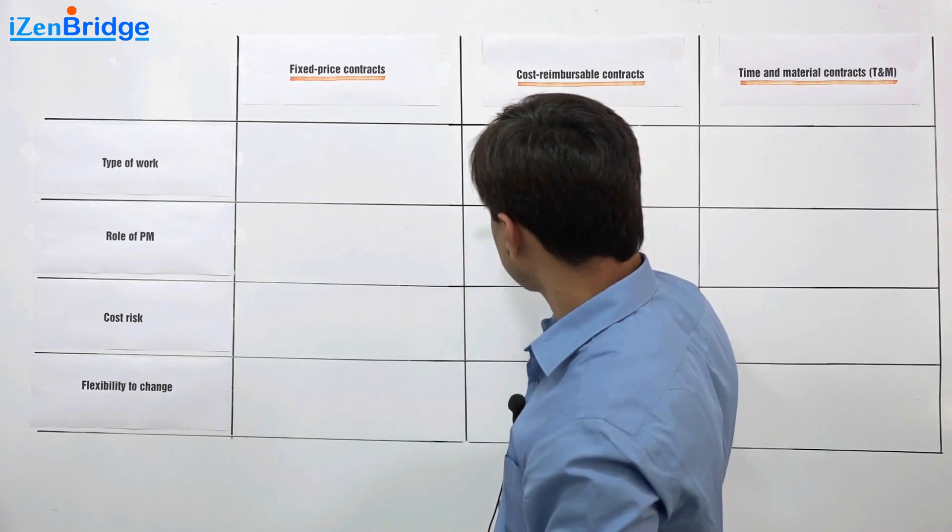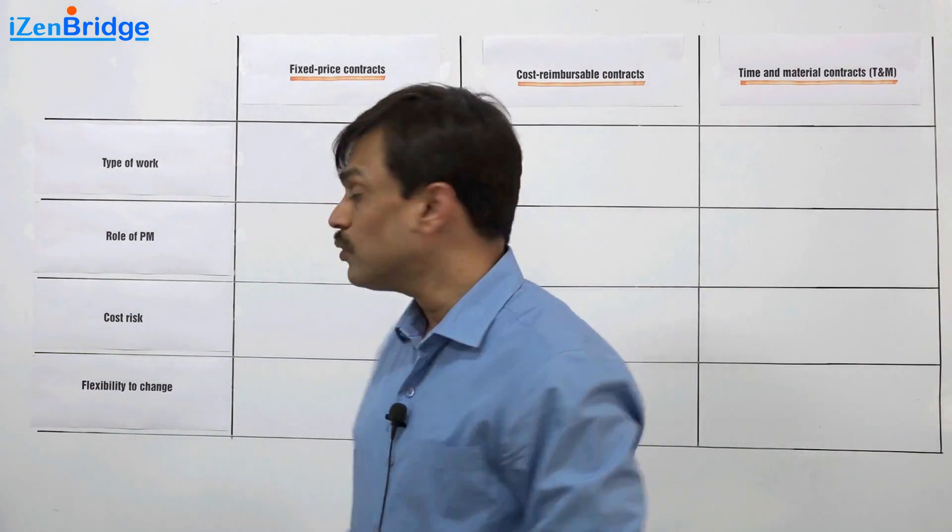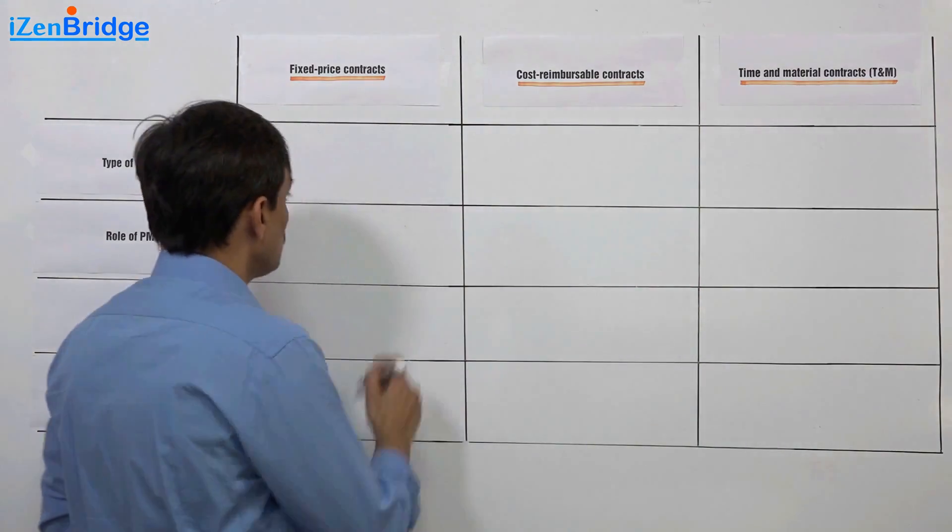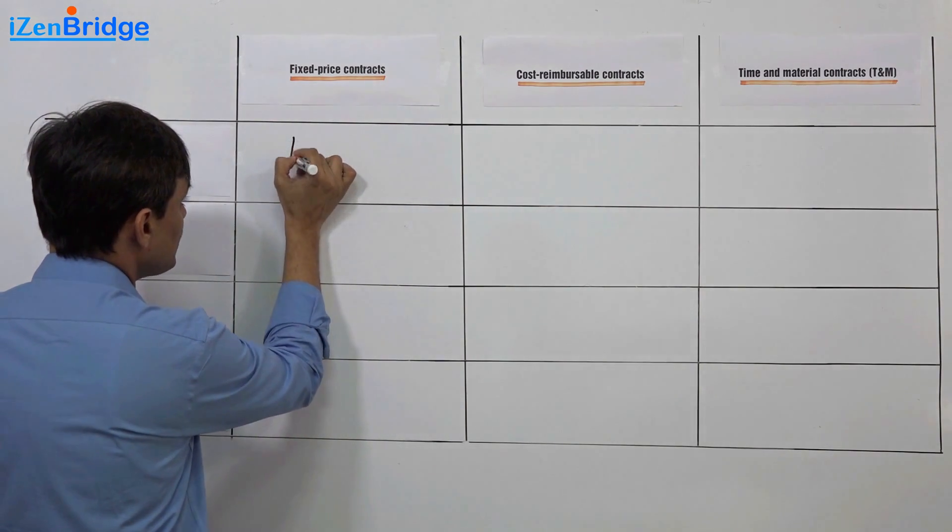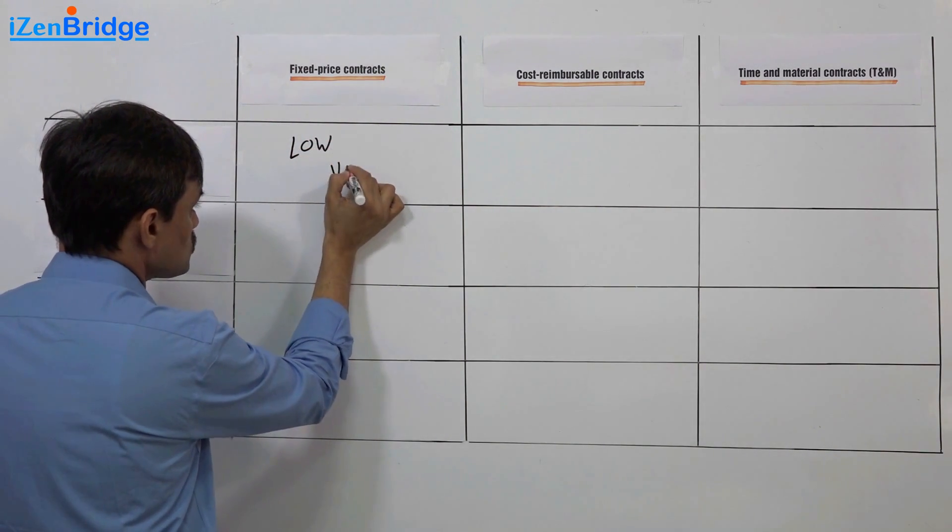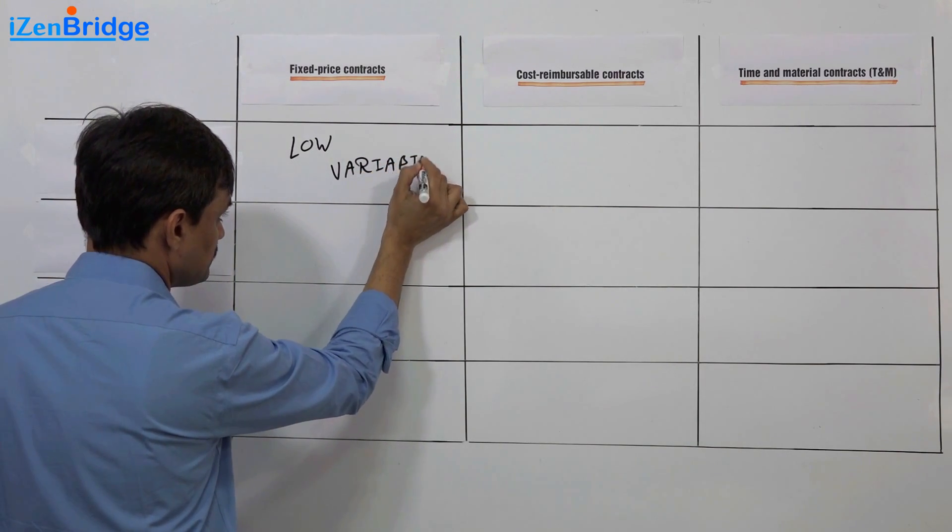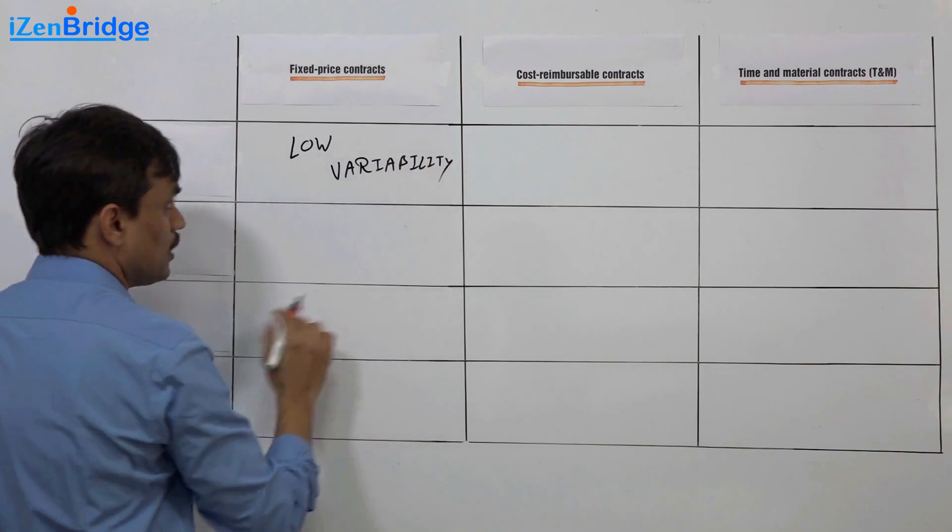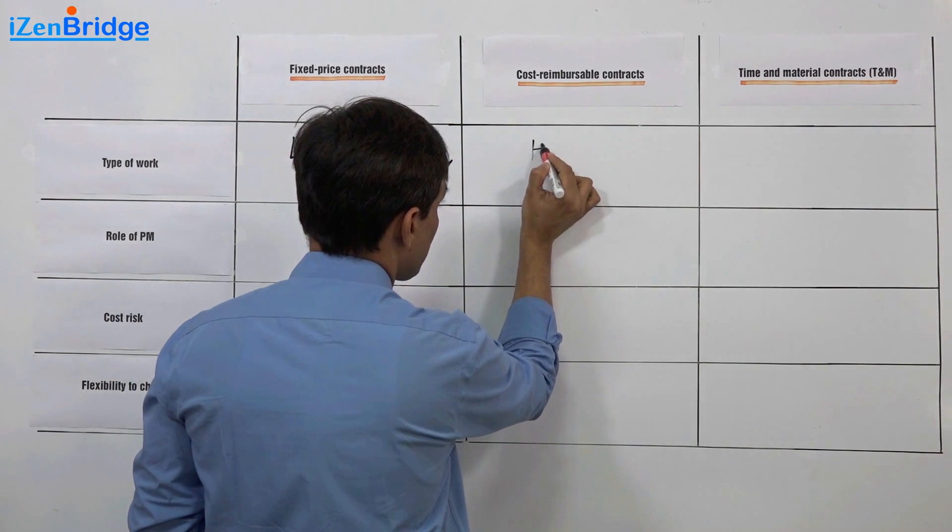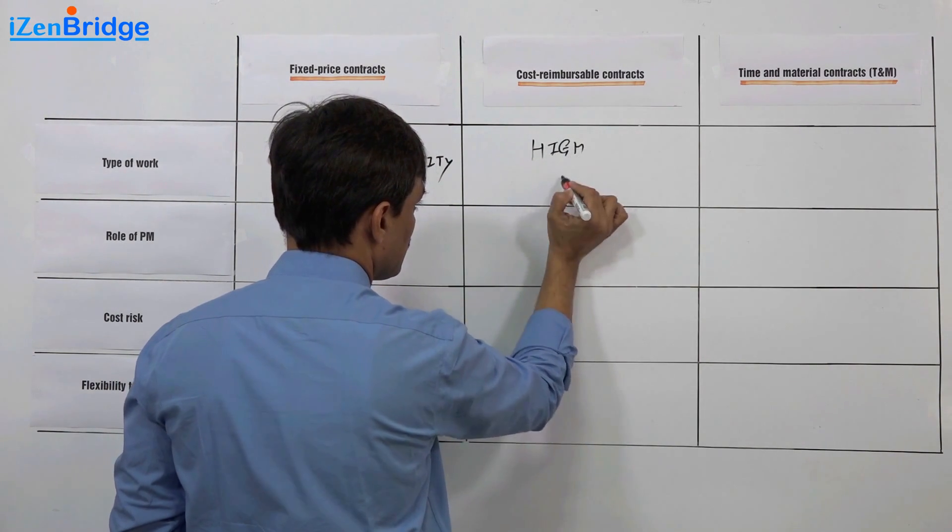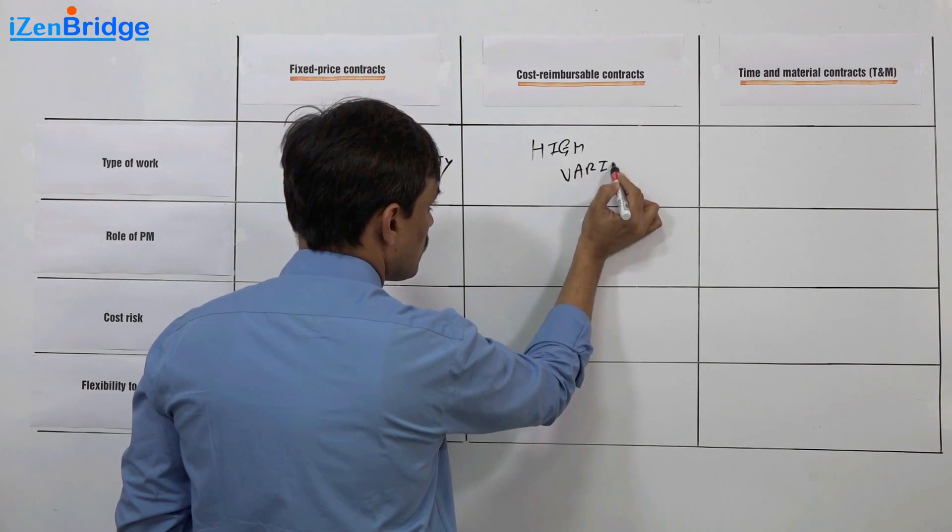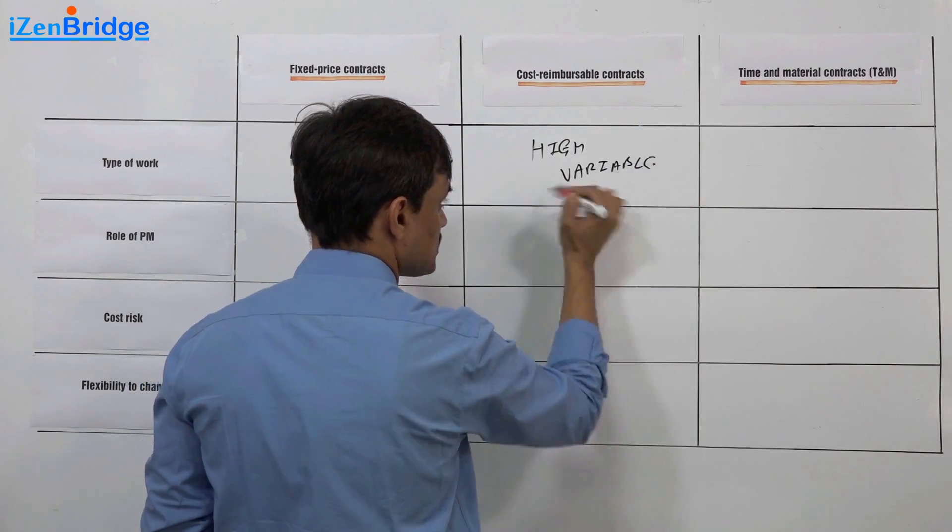Cost reimbursable: I can say that type of work where there is low variability goes to fixed price. In cost reimbursement there is high variability.